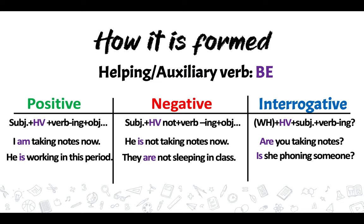Every tense in English needs an auxiliary verb, or a helping verb. In this case, the present continuous or present progressive has the verb to be as its auxiliary verb. That means: I am, you are, he/she/it is, we are, and they are.